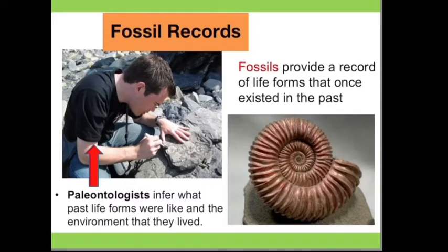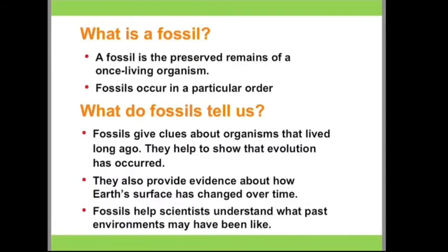Still, nevertheless, the fossil record gives a surprisingly clear insight into the historical sequence of events that gave rise to the life we see around us today. A fossil is the preserved remains of a once-living organism — traces of animals, plants, and other organisms from the past. Fossils occur in a particular order. The relative age of such fossils is determined by their order in the stacks of layered rocks that make up the stratigraphic record, meaning the older rocks are on the bottom and the younger rocks are on the top.